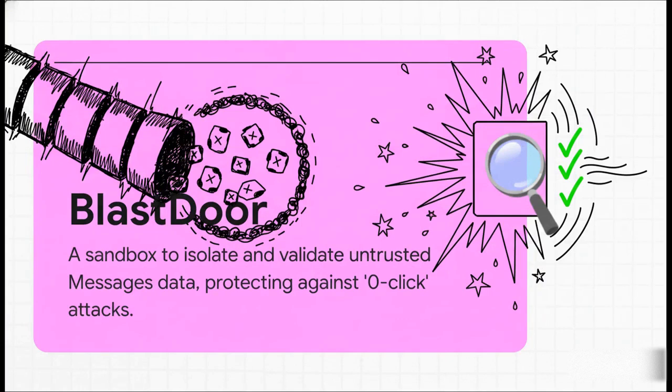Apple's direct answer to the zero-click threat is a technology called BlastDoor. You can think of it like a detonation chamber built right into the operating system. All the untrusted data coming in from a service like iMessage gets funneled into this highly restrictive sandbox. Inside that isolated environment, the data can be safely parsed and validated. The whole idea is to contain and neutralize any potential exploit far away from the core OS, which massively increases the difficulty and cost for an attacker.